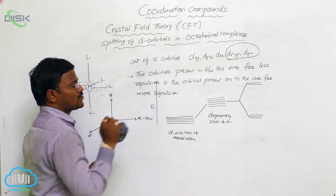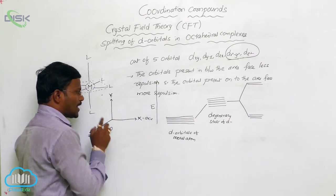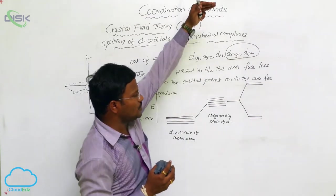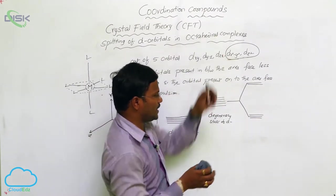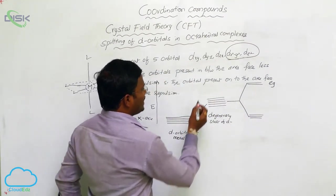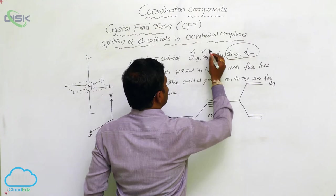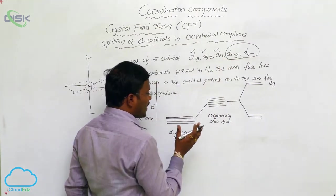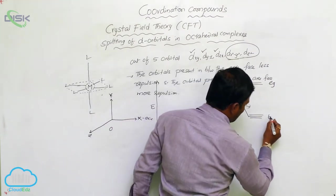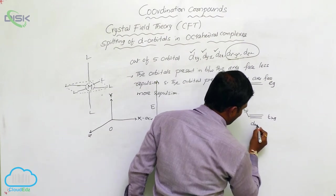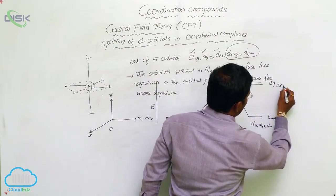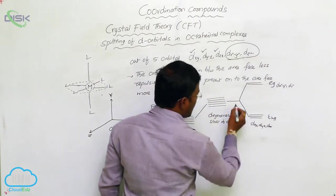The dx²y² and dz² orbitals, which are present on the axis, will face strong repulsion with the approaching ligand. Hence, the energy of those orbitals increases and they enter into the eg level. The remaining 3 orbitals — dxy, dyz, dzx — cannot face stronger repulsions with the approaching ligand and enter into the less energetic T2g level, where dx²y² and dz² enter into the higher energy level.